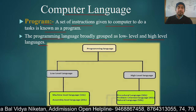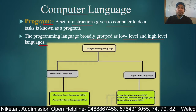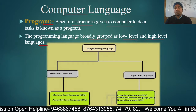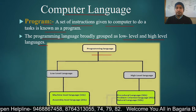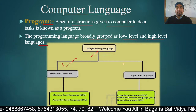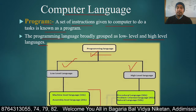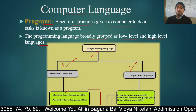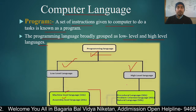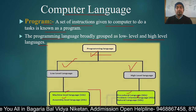Programming language is divided into low-level and high-level. The low-level language has two types: machine language and assembly language. The high-level language includes third generation (3G), fourth generation (4G), and fifth generation (5G) languages.